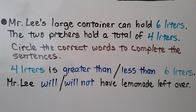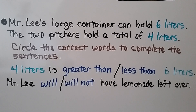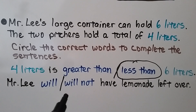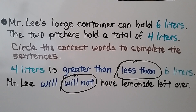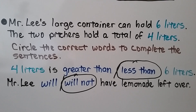Mr. Lee's large container can hold six liters, and the two pitchers hold a total of four liters. Four liters is less than six liters. Mr. Lee will not have lemonade left over — his large container holds six liters, but he only filled it with four. There's not any lemonade left over; he still has room to pour more in. He didn't have enough.